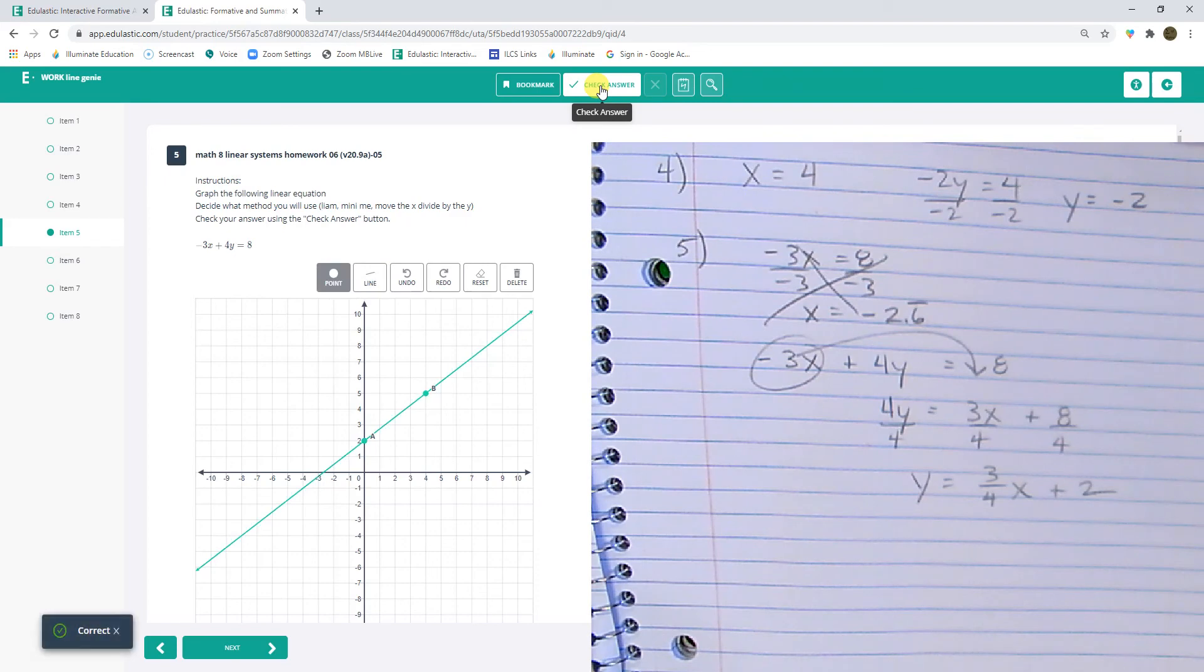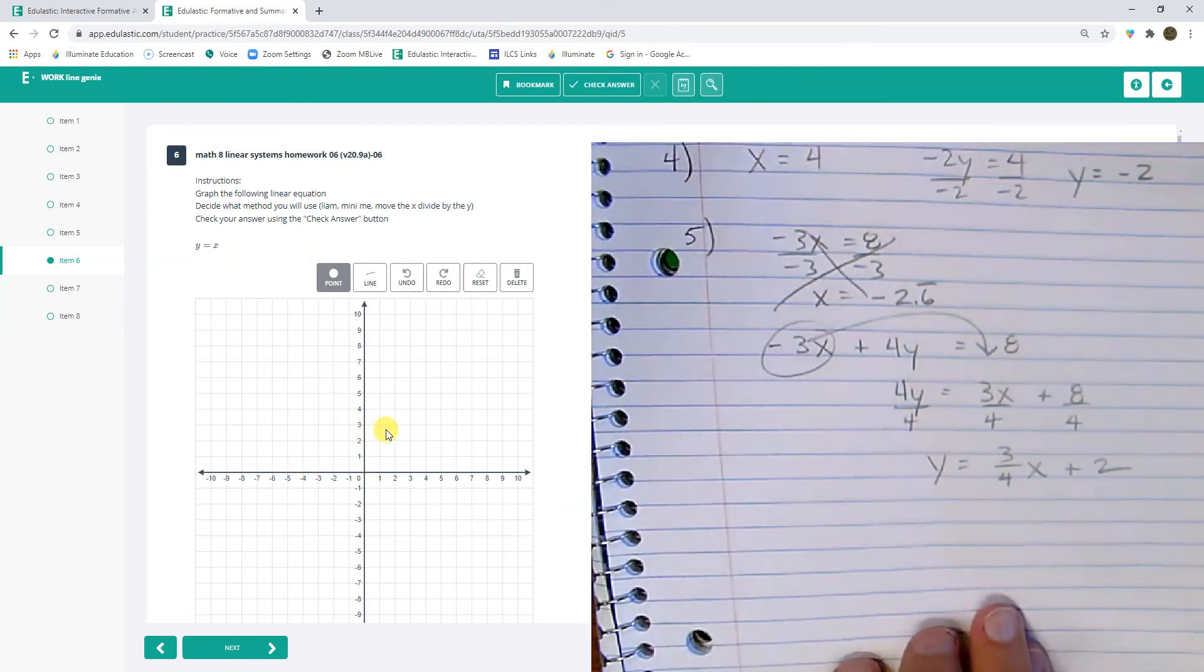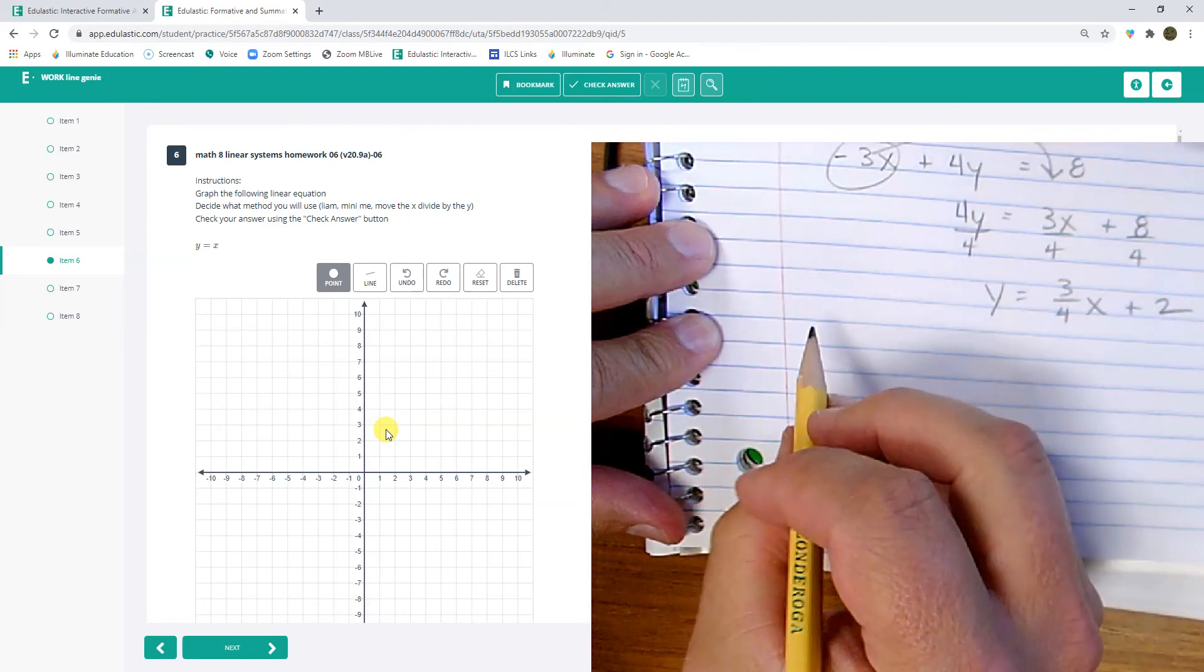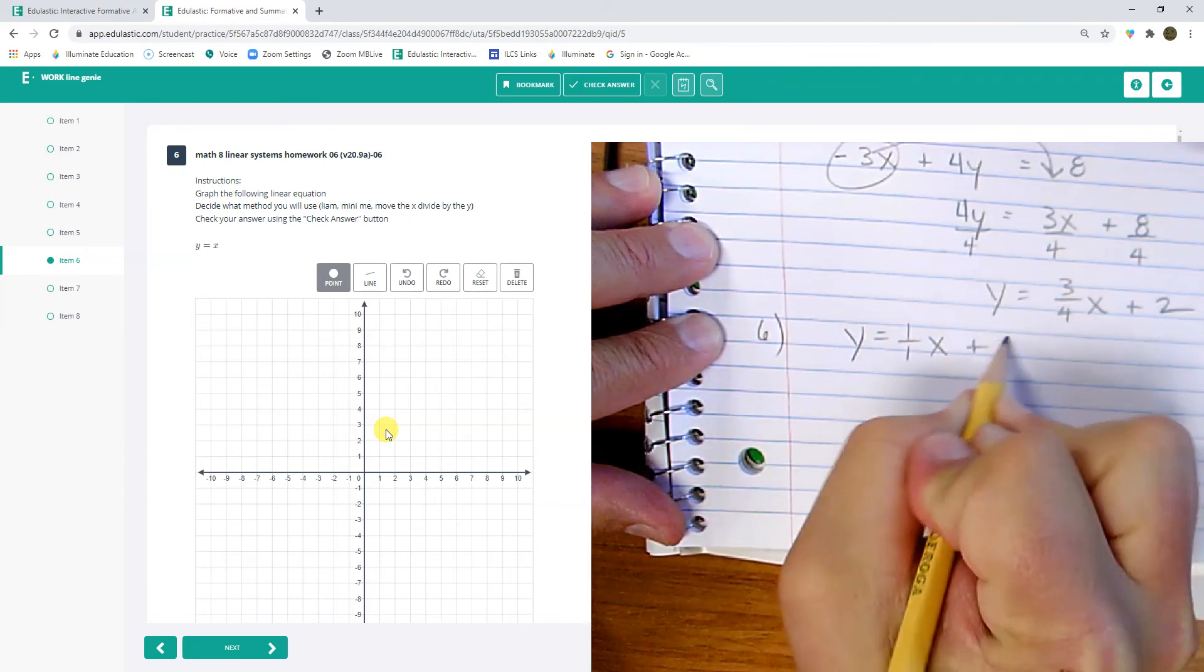That's it. It would be awesome if I could graph using slope-intercept form. Okay, number 6. Y equals x. Well, this guy has a... Here, I'll show you what's going on here. This is number 6.